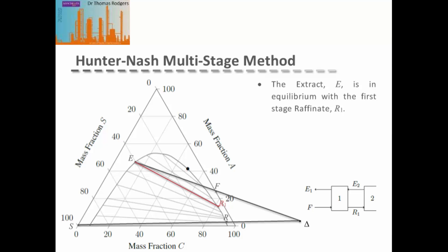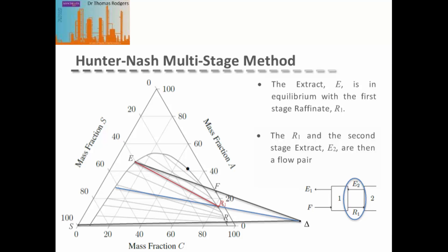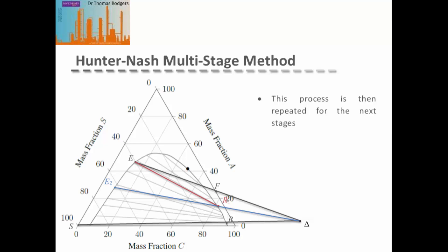The next step is to look at the next flow pair. Our L1 and our second stage extract E2 are then the flow pair. We know that for flow pairs, they must lie on a straight line with our operating point. So if we draw a straight line between our operating point and our R1, we can then extend this to the other side of our equilibrium curve to get our E2 composition. This stepping process is then repeated for the other stages — first equilibrium, then operating line, and so on.